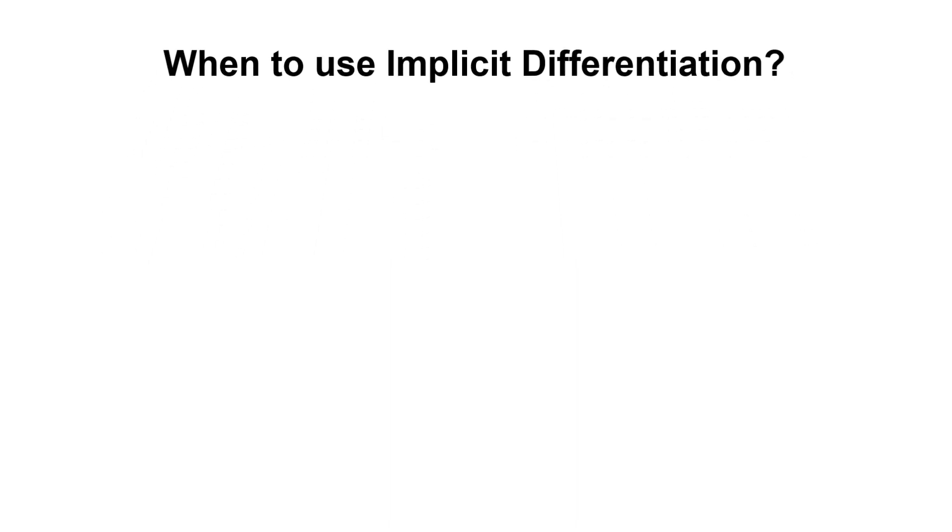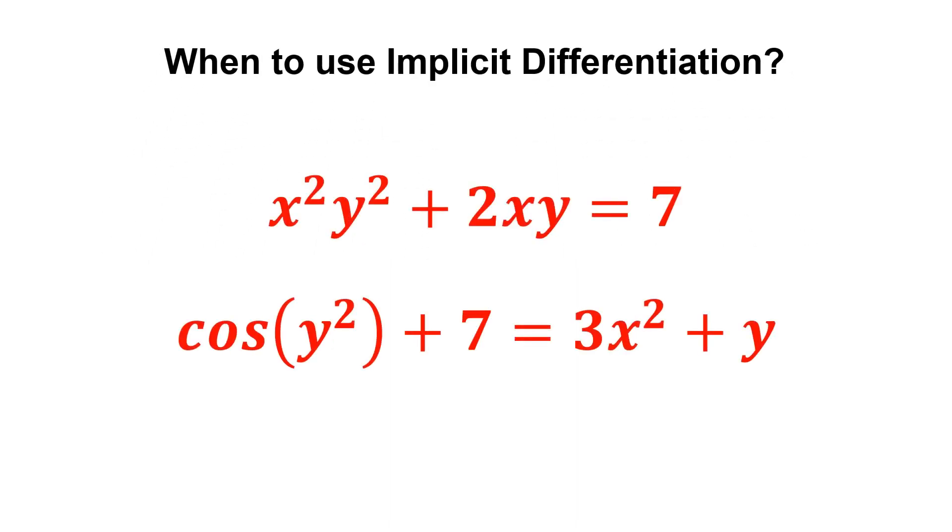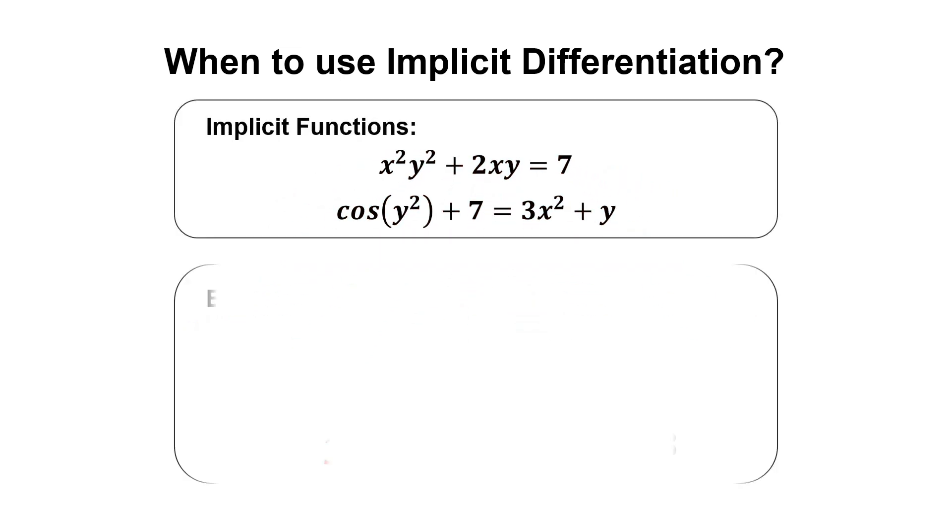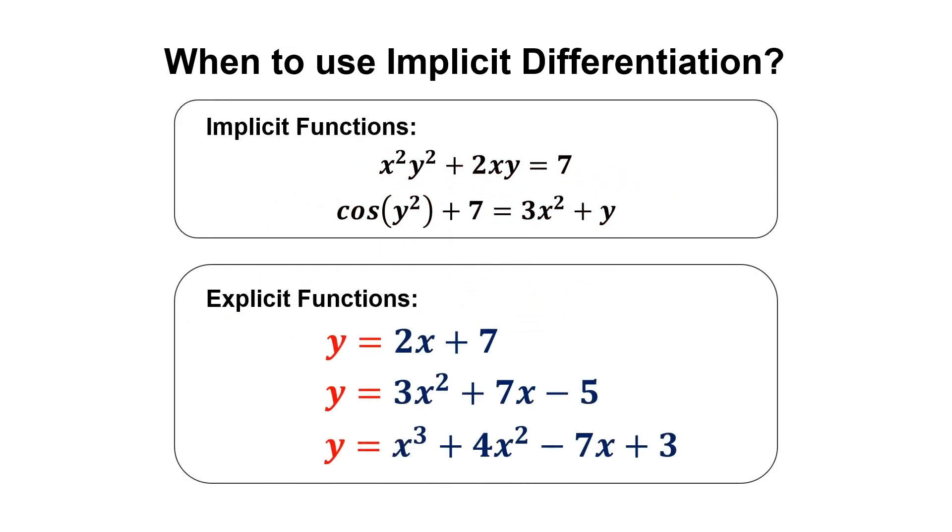Implicit differentiation is used when we cannot write a function y in terms of x directly. Normally, we're dealing with functions that can be separated in terms of x easily. Notice that only y is on the left-hand side and the x's are on the right-hand side.